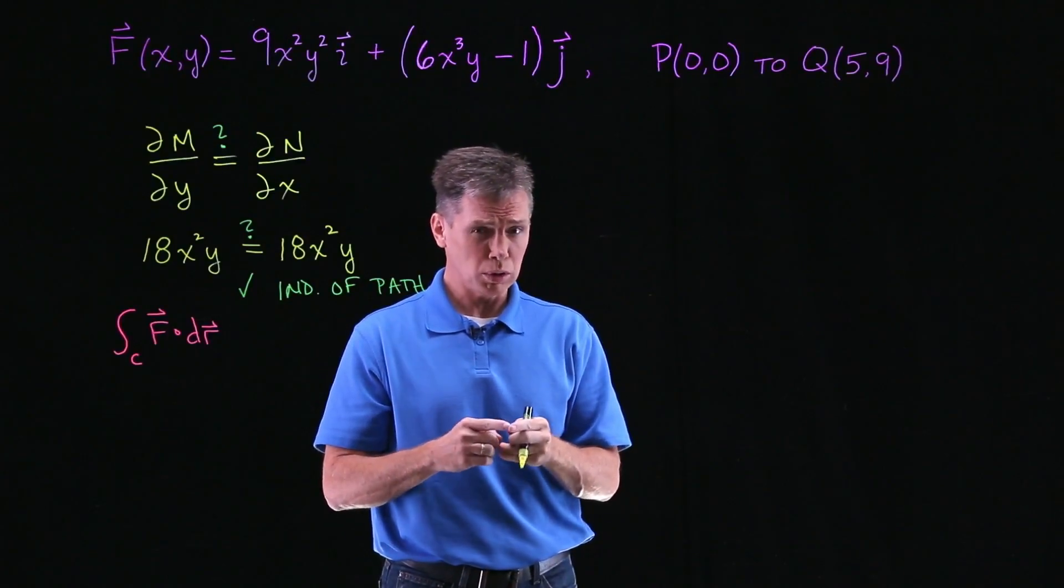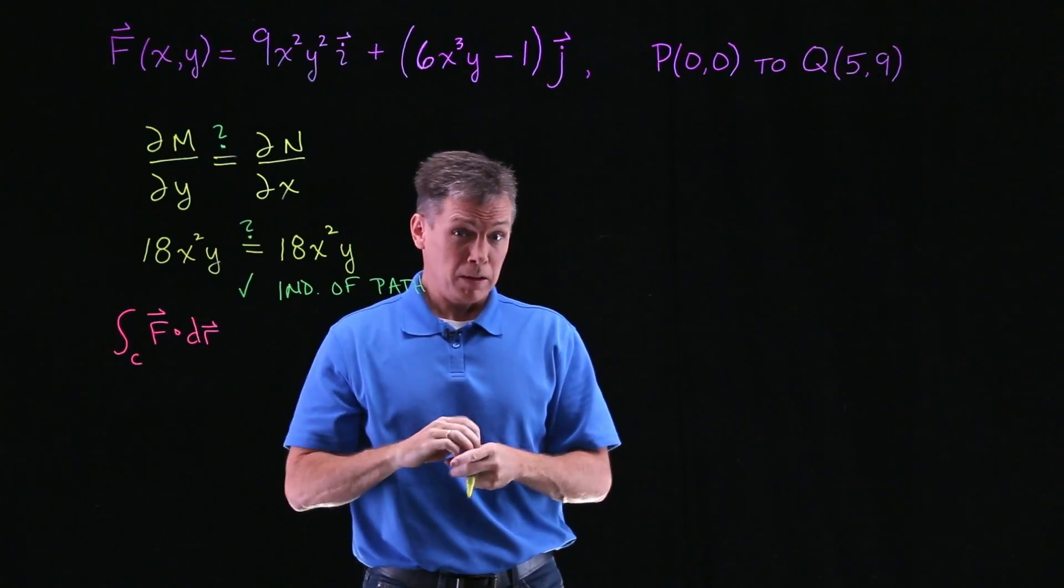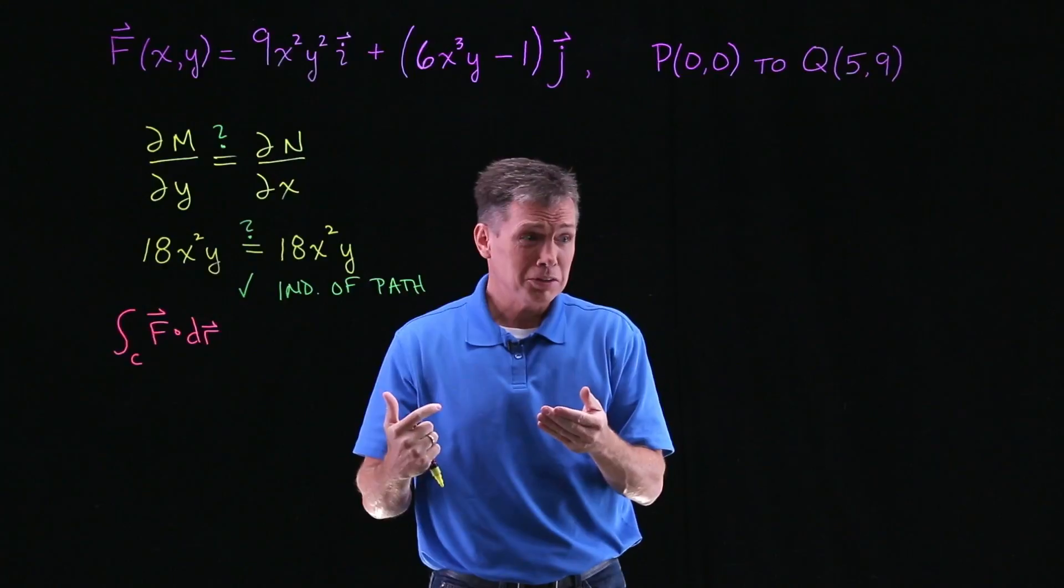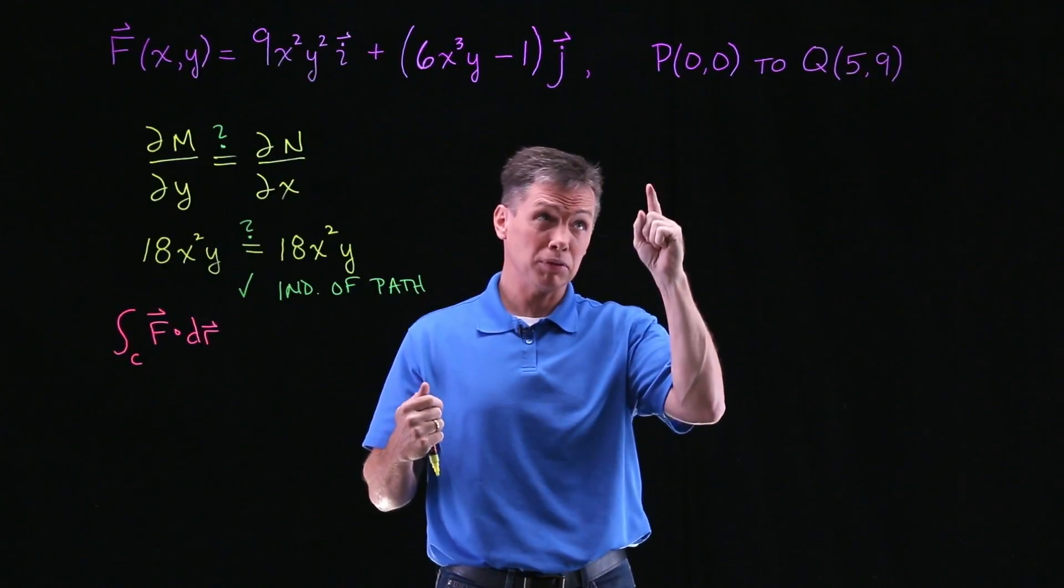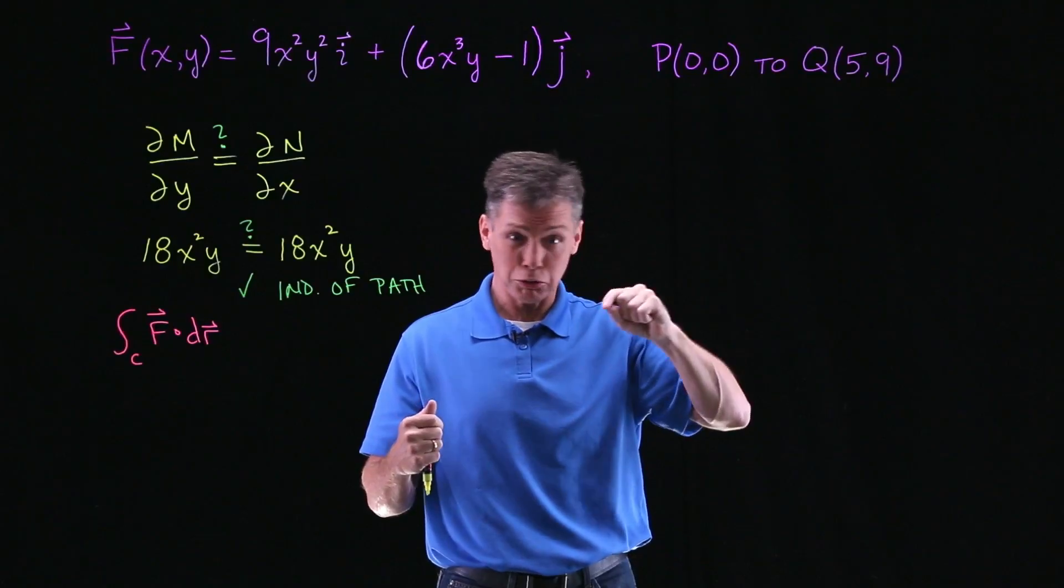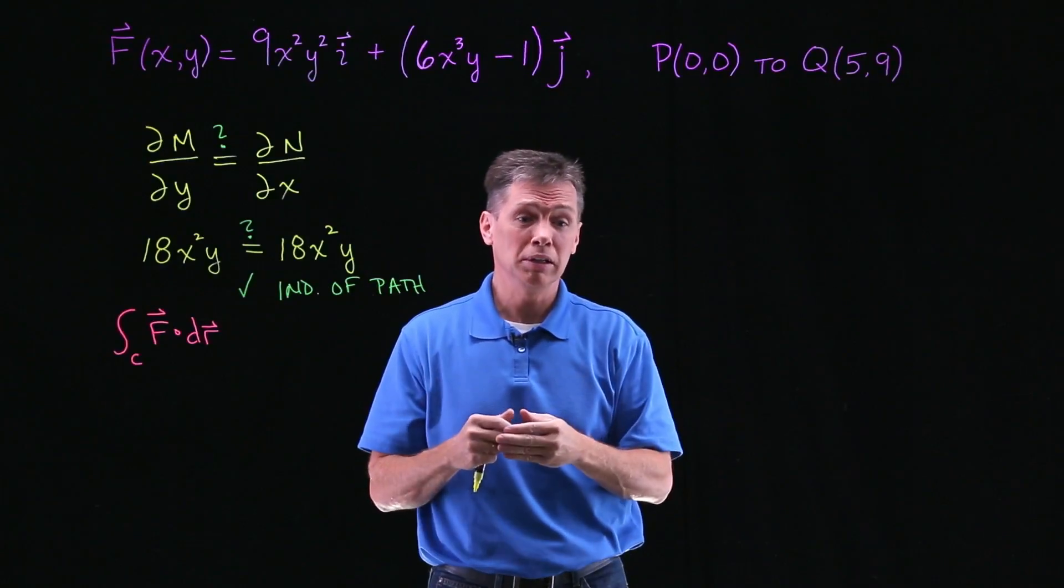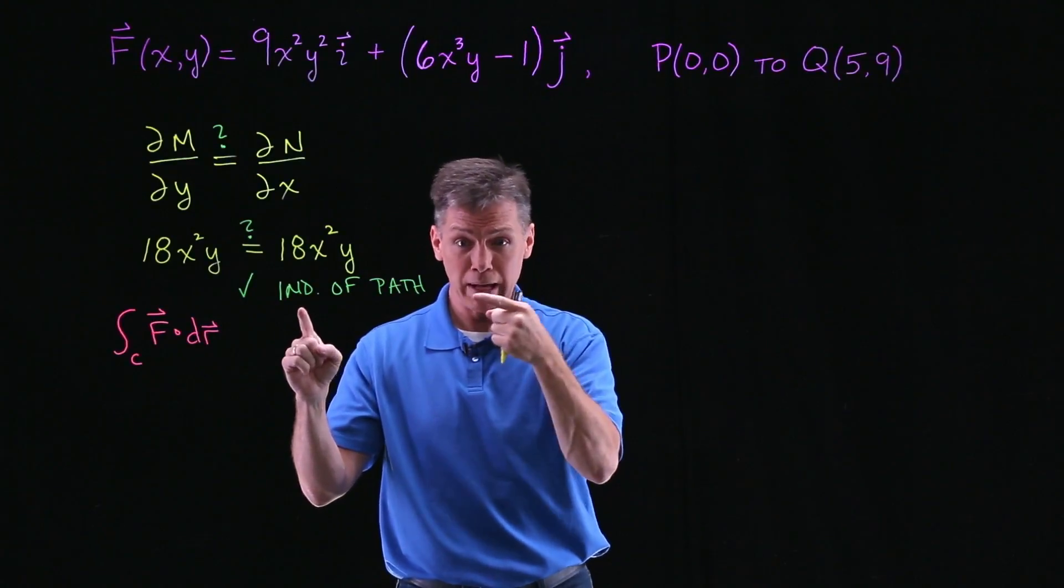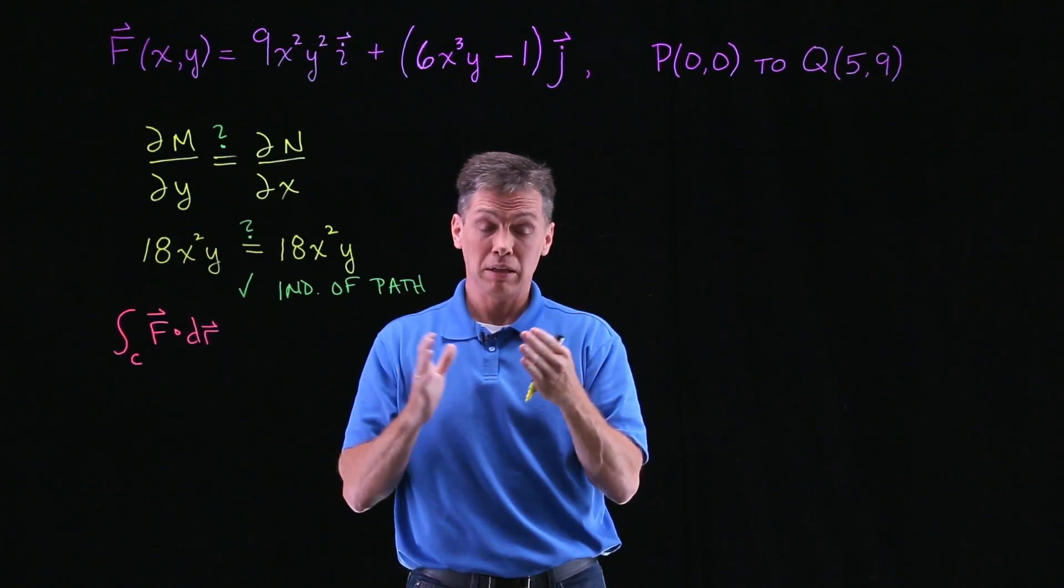Remember the second part is that we're supposed to calculate the work that this force field would do on an object traveling from P to Q. But what's missing is we don't know what path that object took to get from P to Q. Did it go straight line distance? Did it do some kind of spiral? Who knows what it did, who cares what it did.